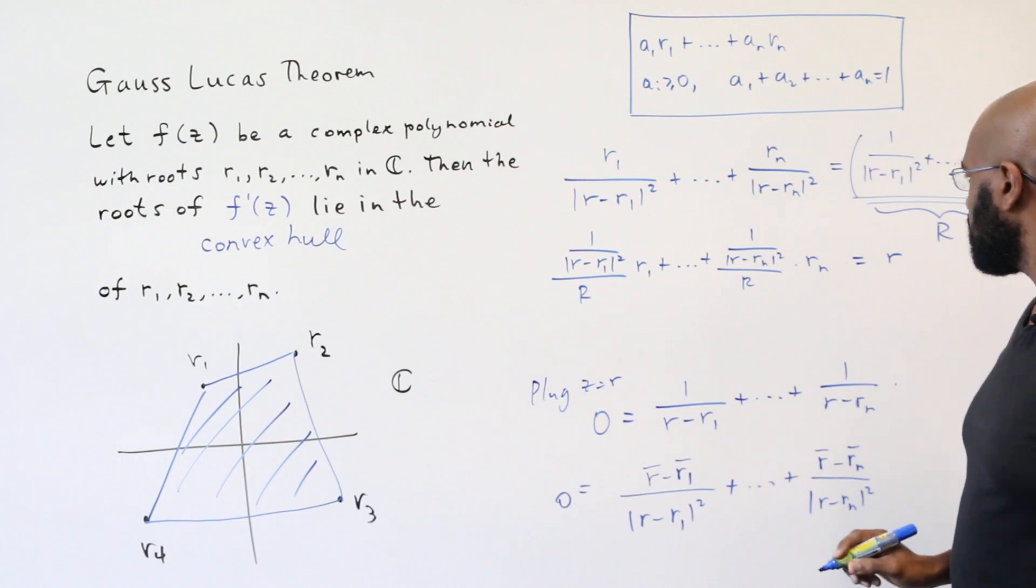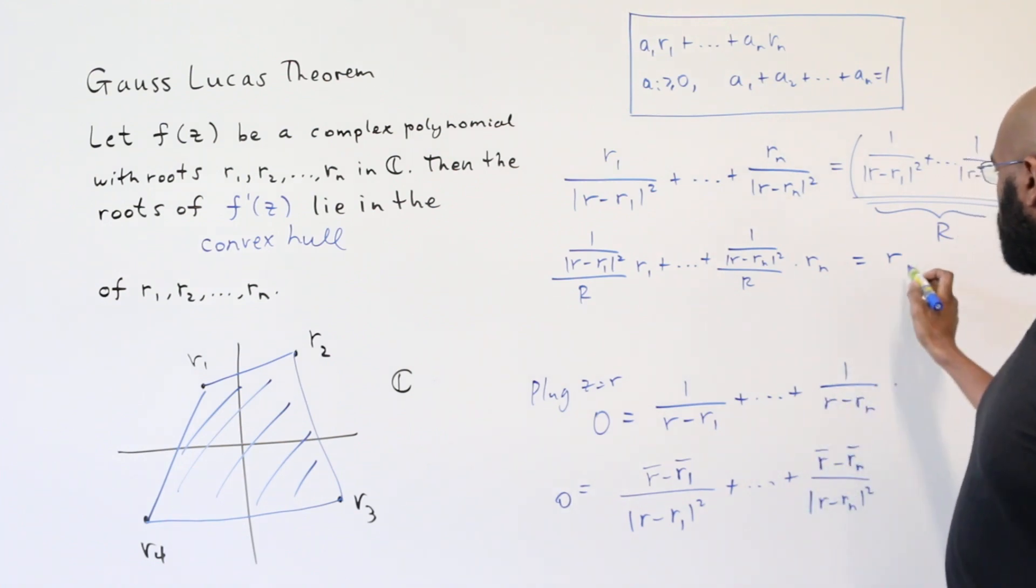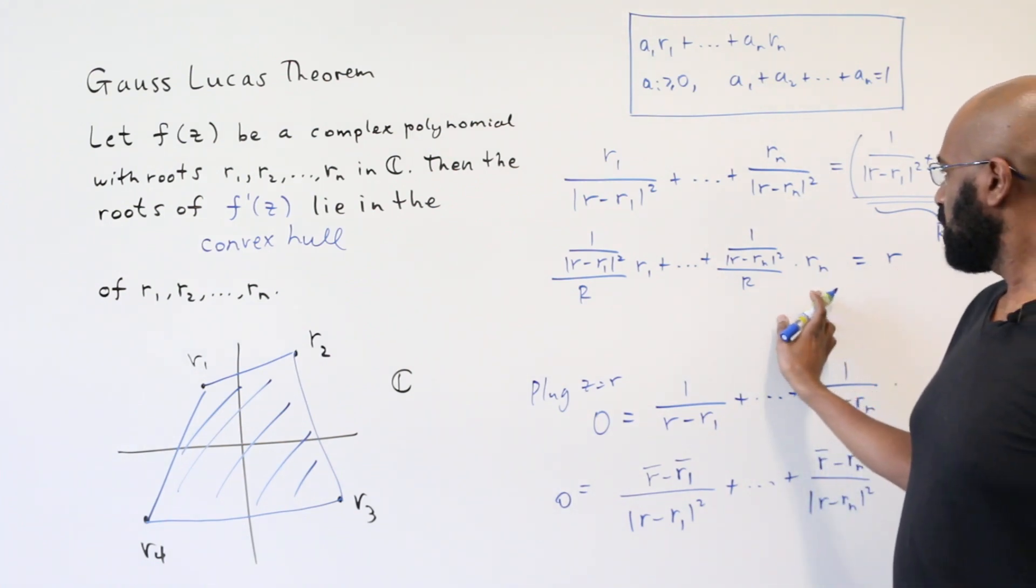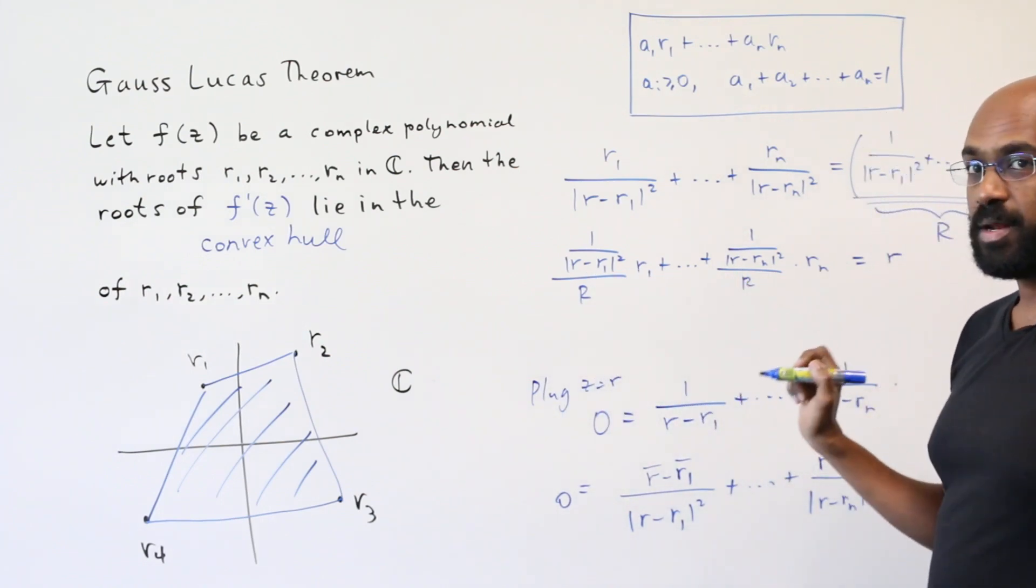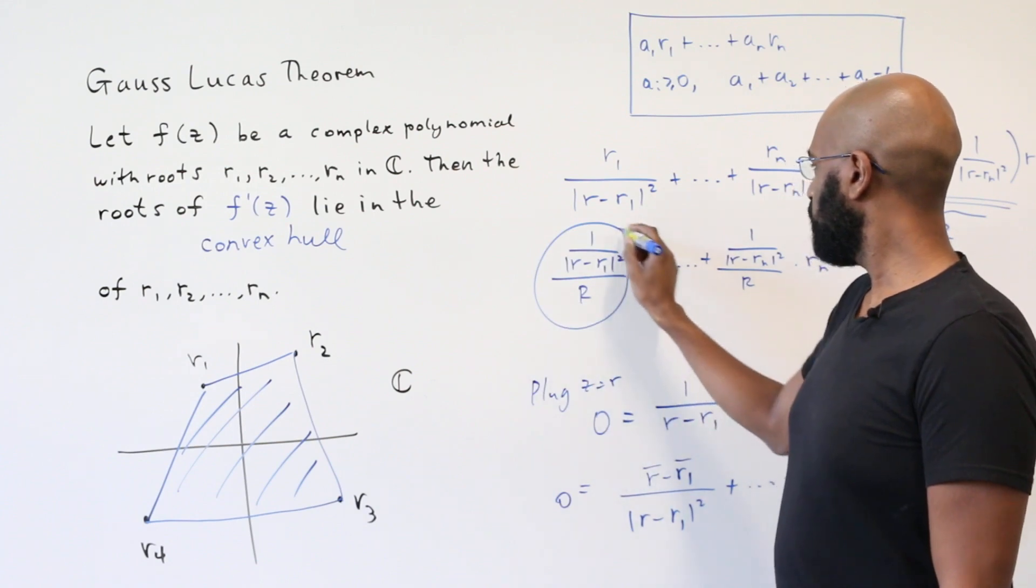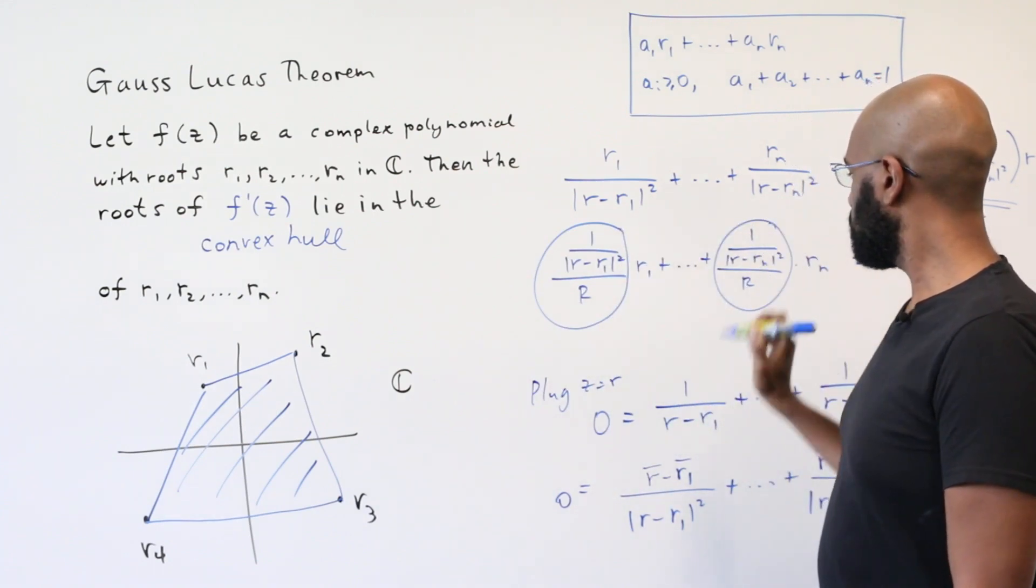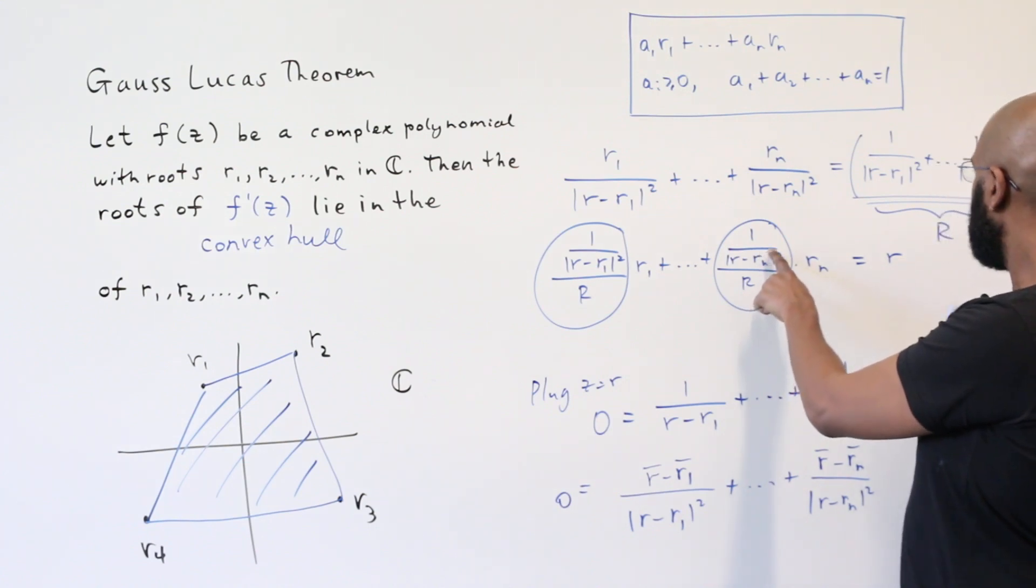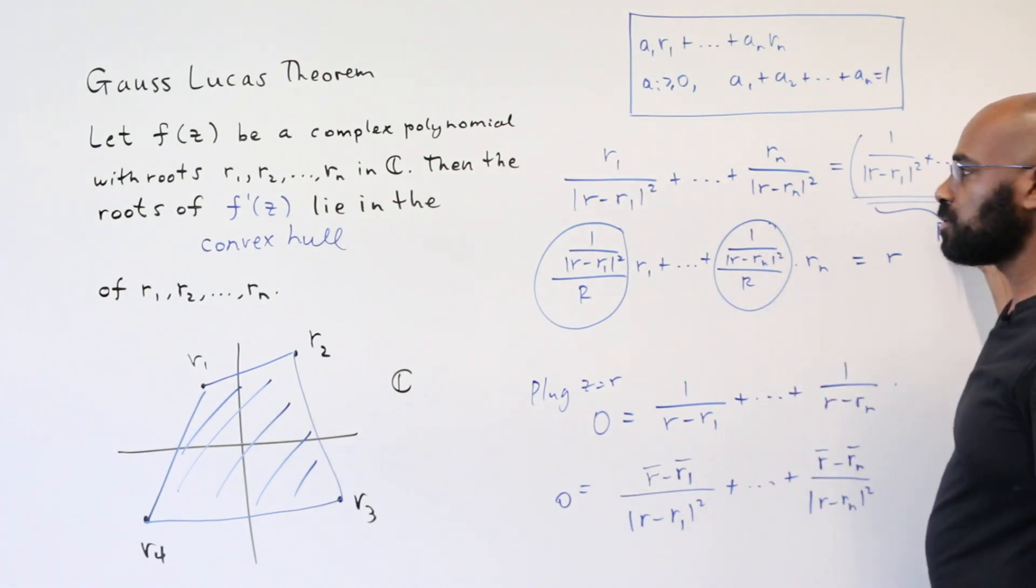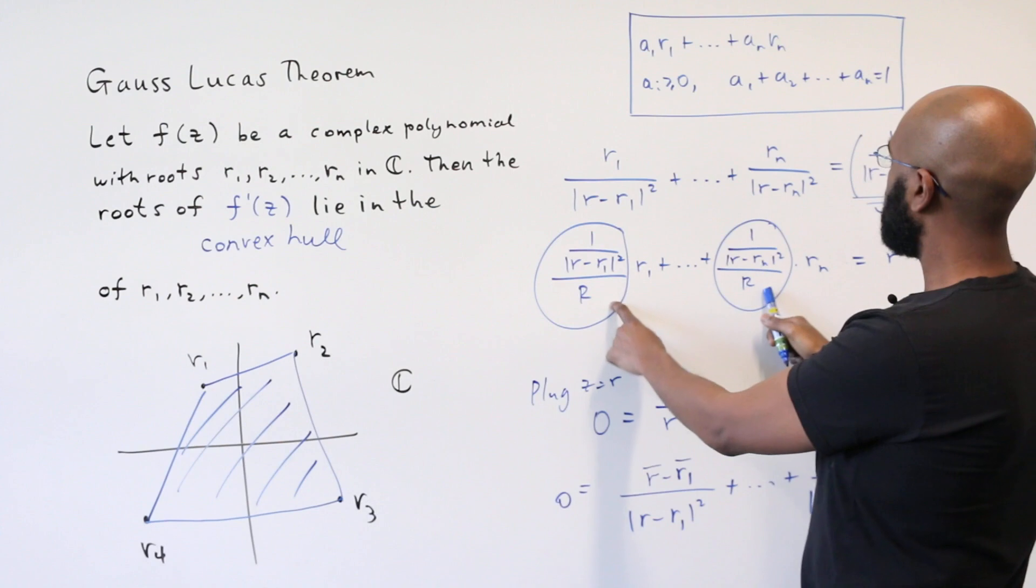So let's take a look at this situation. We have r represented as scalars times each of the ri's, added up. And if you look at these scalars, the sum of the numerators is R itself. So these are all non-negative numbers.